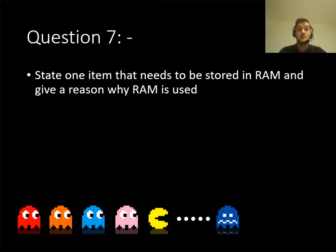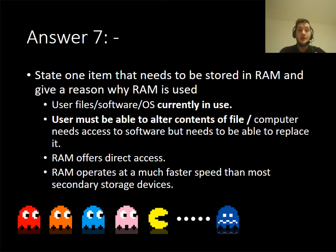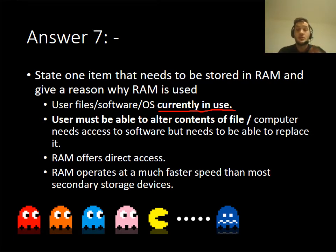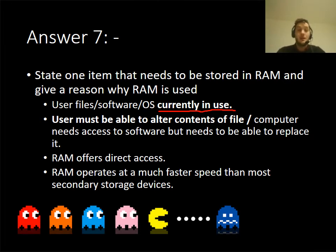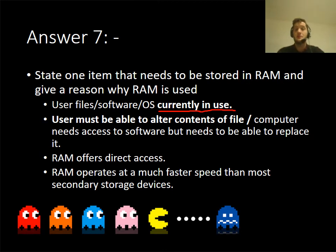One reason why an item would be stored in RAM: the operating system, user software, and applications must be currently in use — if you don't acknowledge that, you don't get the mark. The user must also be able to alter the contents of files, which is why we use RAM. RAM offers direct access — from the CPU, we can access RAM using different buses, and it's much faster than secondary storage such as a hard drive, which is further away from the CPU.